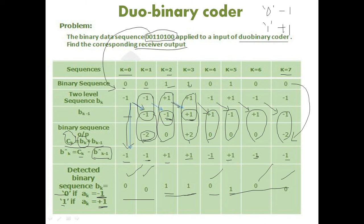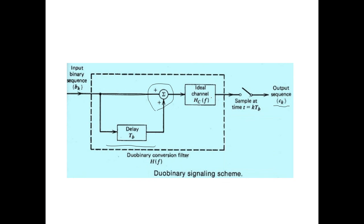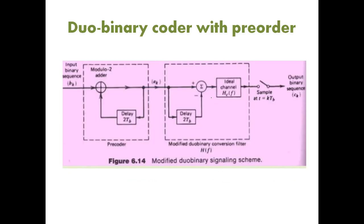This is how we encode a sequence into voltage levels using duo binary coding, introducing controlled ISI at the transmitter and compensating at the receiver. If we go for duo binary with pre-coder, the first dotted-line section is the pre-coder and the second section is the modified duo binary conversion filter. Thank you.